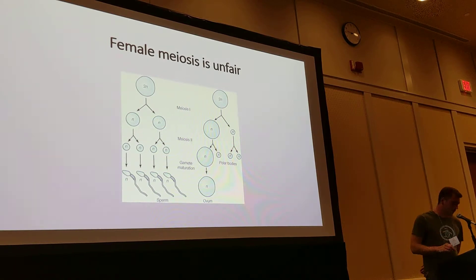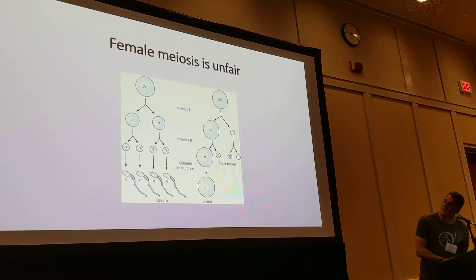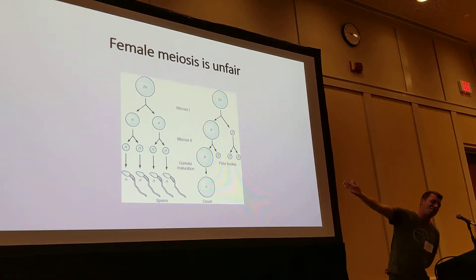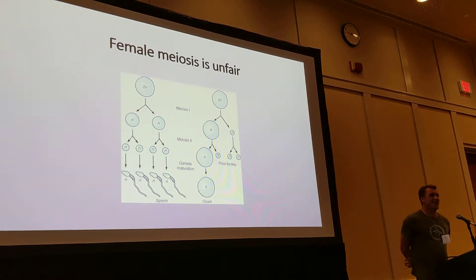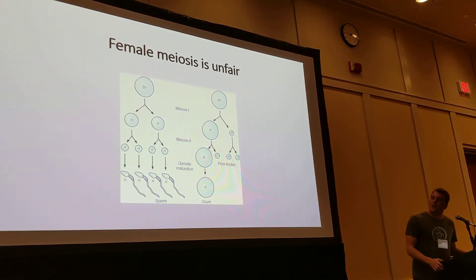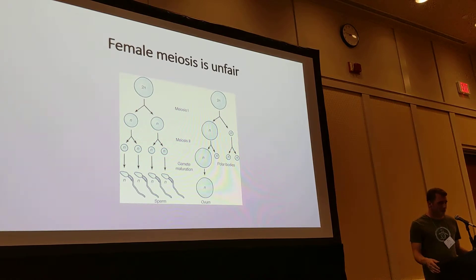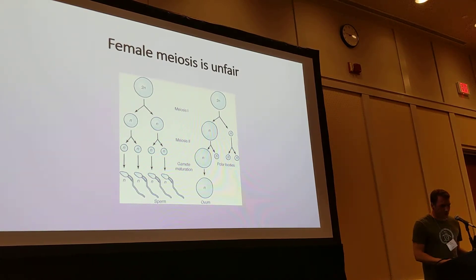I want to remind you that female meiosis is unfair. In male meiosis, there are four meiotic products, and all of them become sperm in a typical organism. But in a typical female, only one of the four meiotic products becomes the egg. So female meiosis is unfair — keep that in mind for what I'm about to explain.